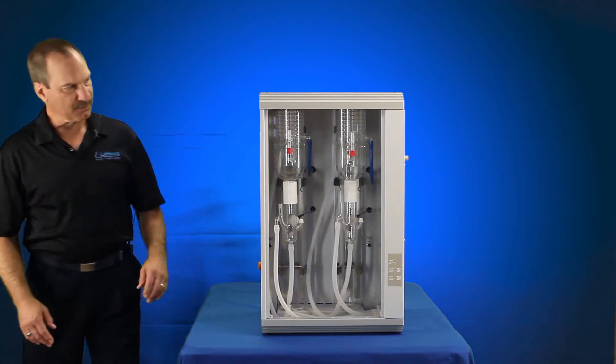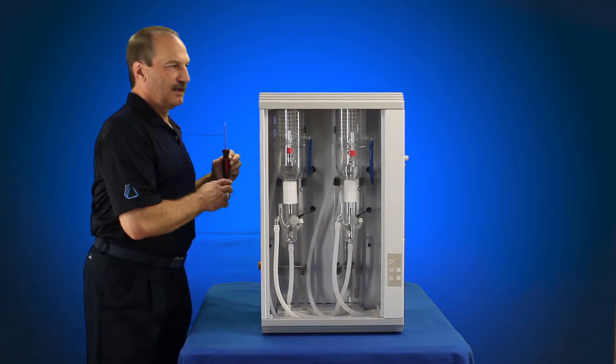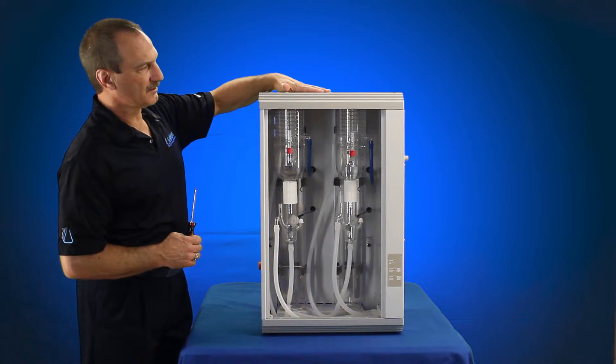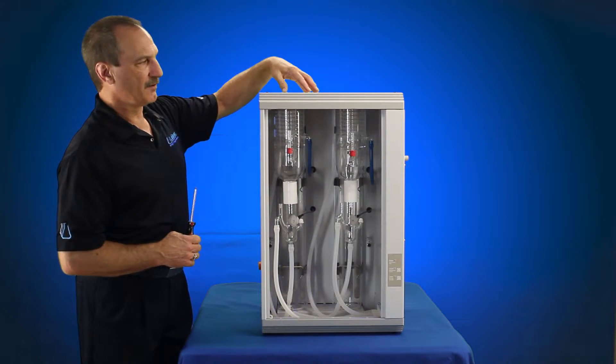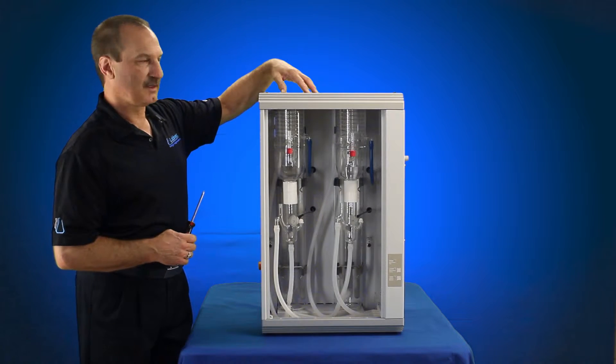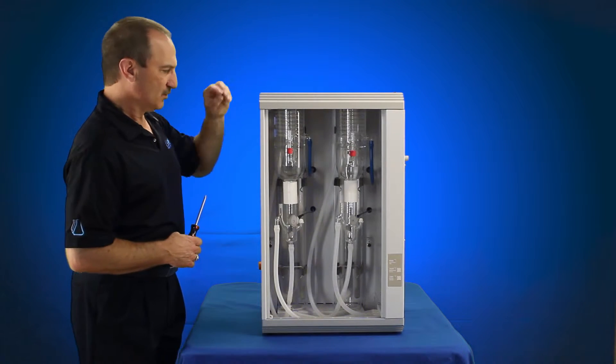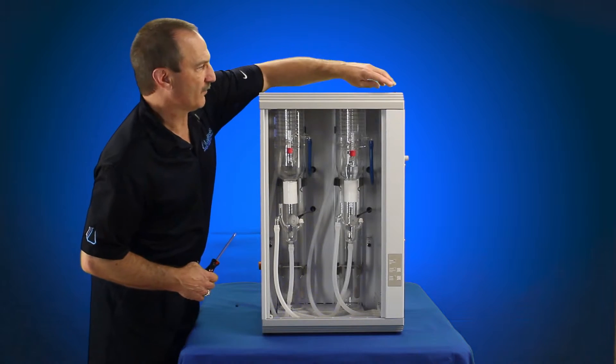Now we're going to go ahead and remove the top cover. Top cover for the 8L or 4L bi-distiller, same size. The top cover for the 4L bi-Stream 3 is just a little smaller but still has the same two blanking plugs that you're going to remove from the top.